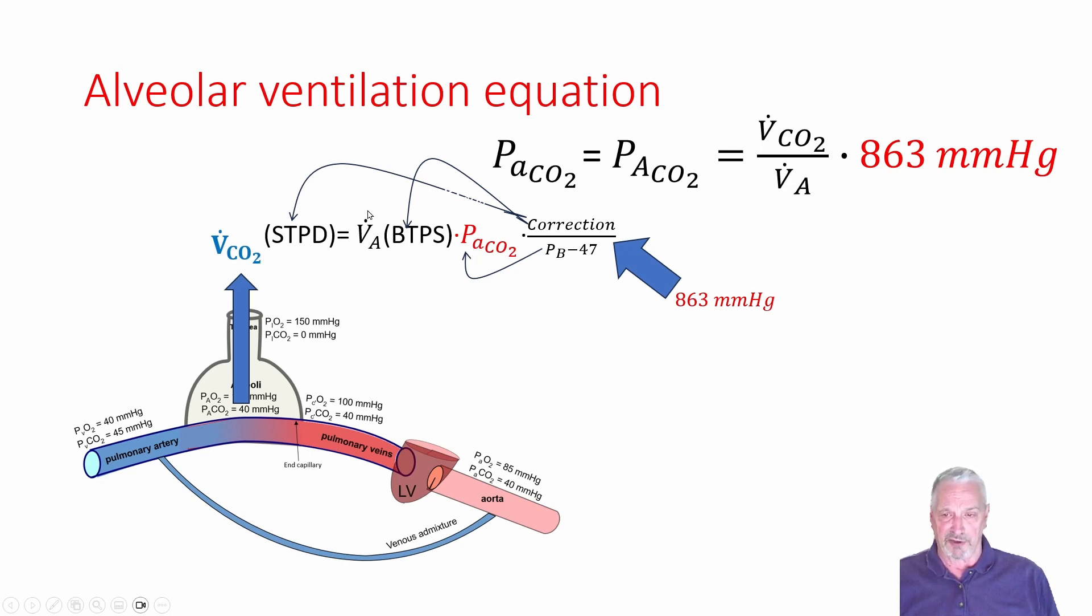But we always chart CO2 under standard temperature pressure dry. To allow us to convert from BTPS to standard temperature pressure dry, we need a correction factor of some sort. And it turns out this correction factor has another PB minus 47 in it that cancels out with this one here, leaving us with simple constant 863 millimeters of mercury. So the 863 comes from two places, correcting from BTPS to standard temperature pressure dry, and going from a fraction of CO2 to a partial pressure of CO2 in the alveolar ventilation equation.